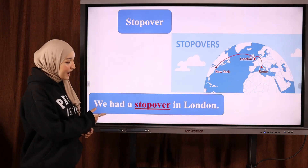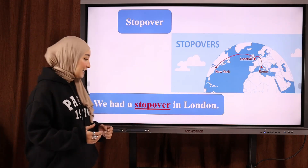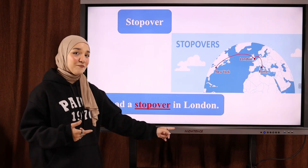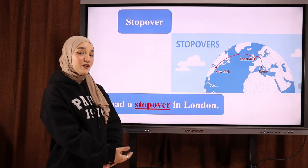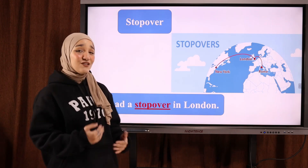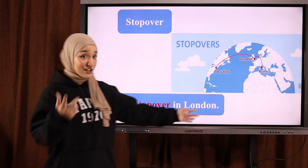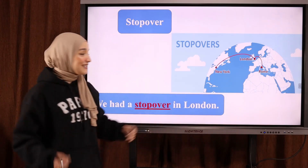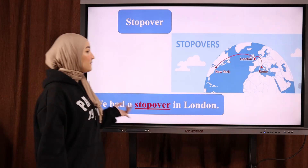Here's an example: 'We had a stopover in London' — قمنا بتوقف قصير في London, and then we will continue with our trip (نكمل على جهتنا) to our destination (إلى وجهتنا), which is New York. So: stopover.